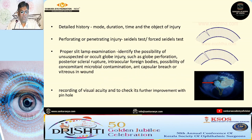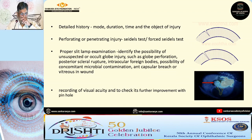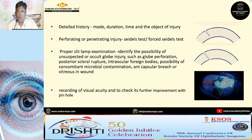A detailed history on the mode, duration, time, or object of injury is very important. It is also important to differentiate between perforating and penetrating injury, which can be ascertained by the Seidel's test. A proper slit-lamp examination is required to look for any occult scleral tear, visible intraocular foreign body, possible anterior capsular breach, or vitreous in the wound. Recording of visual acuity is very important for medico-legal purposes.